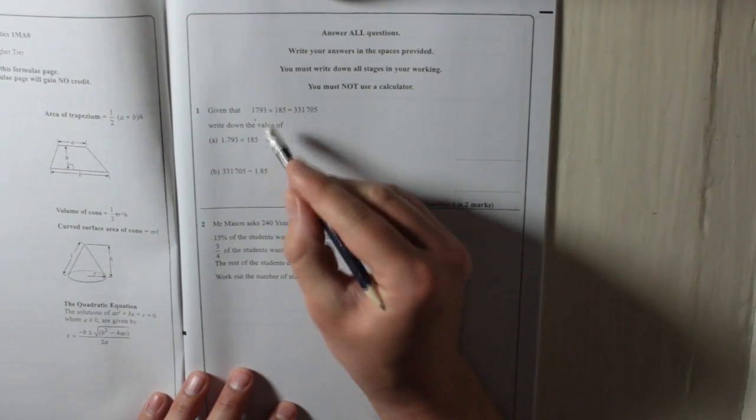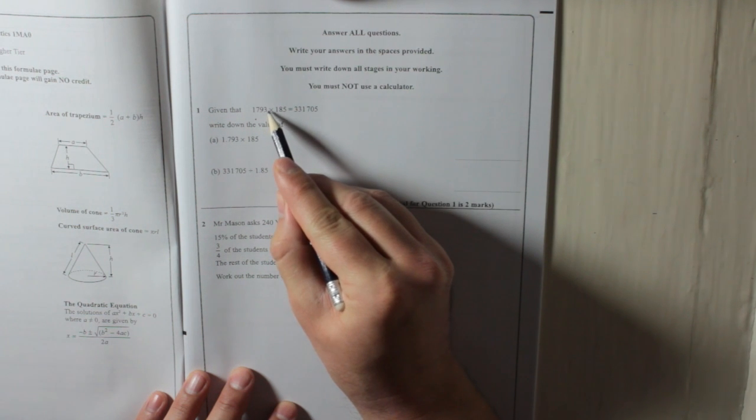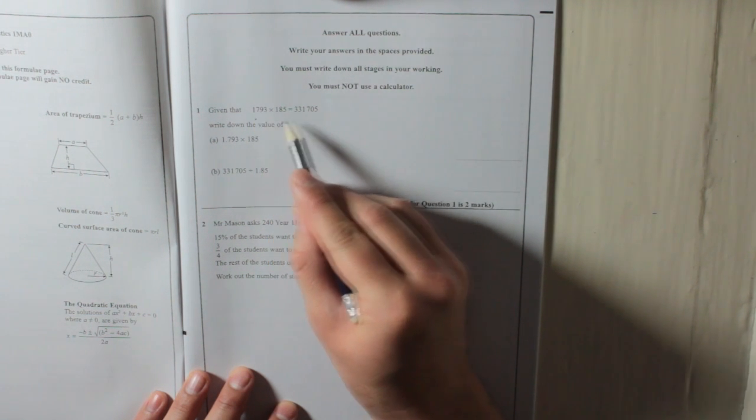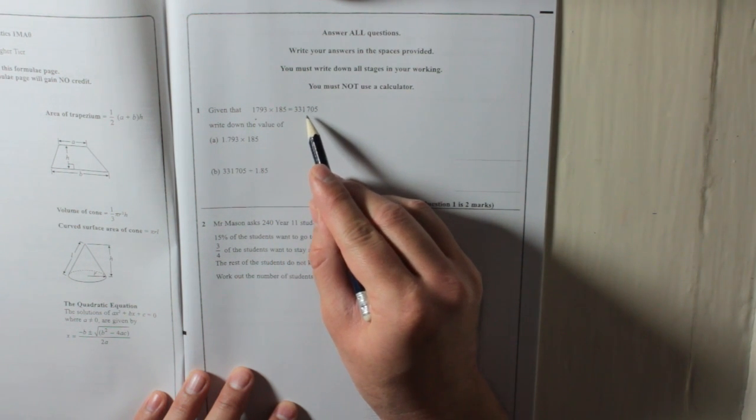1793 has gone down to 1.793. What does that mean? That means it's been divided by 1,000. 1, 2, 3. Which means all you're going to do is take this answer and divide it by 1,000.